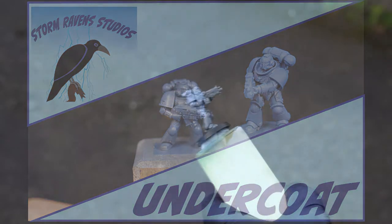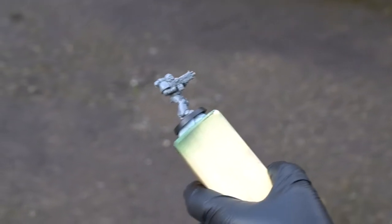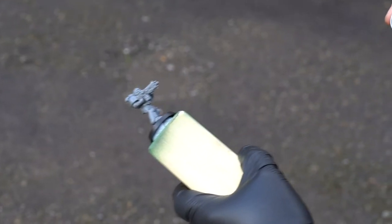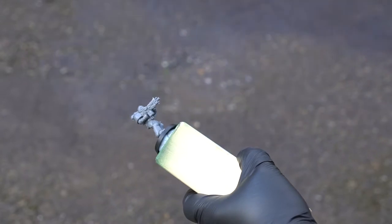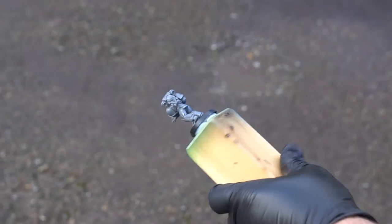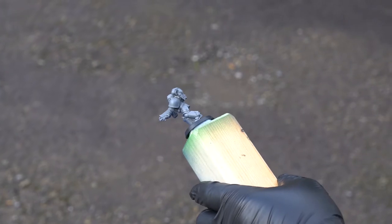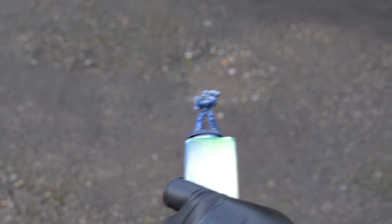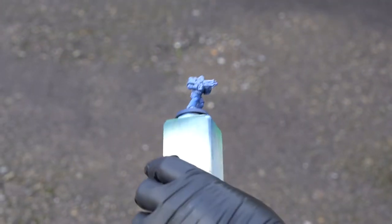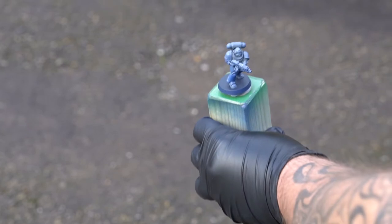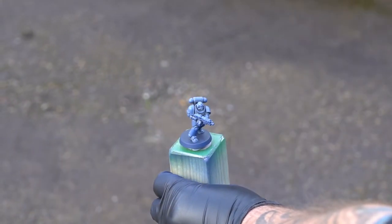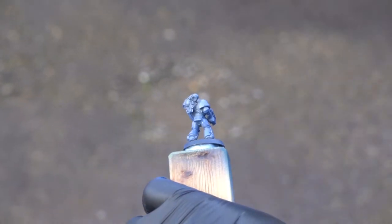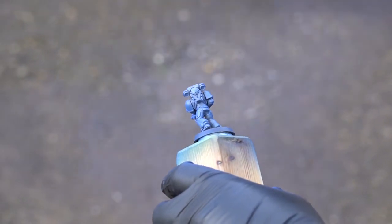In this video we're going to be looking at undercoating. There are three basic ways of doing it. The first one we're going to look at is with the rattle can. As you can see, I've got a model glued to a block and what we're doing is using the spray can in short bursts, keeping it away from the model.